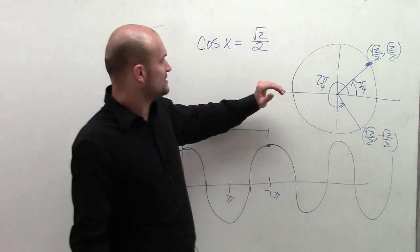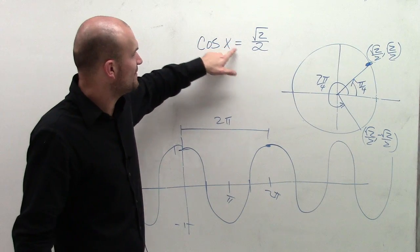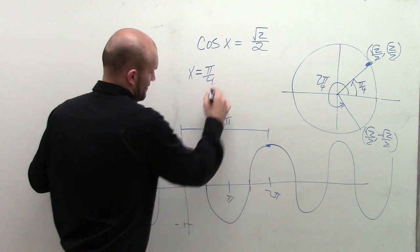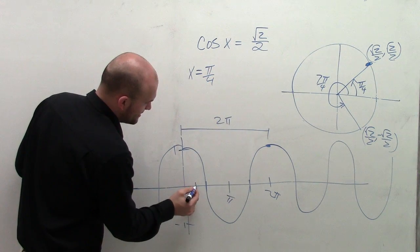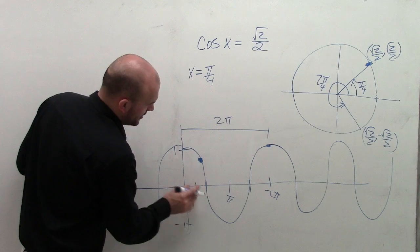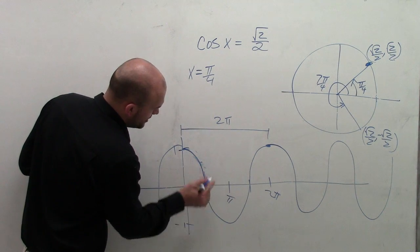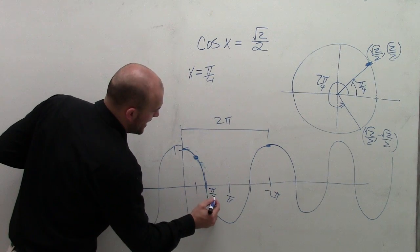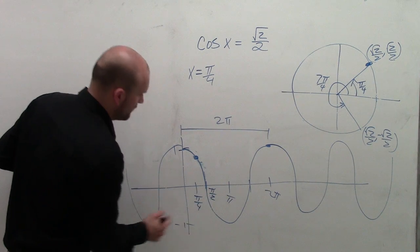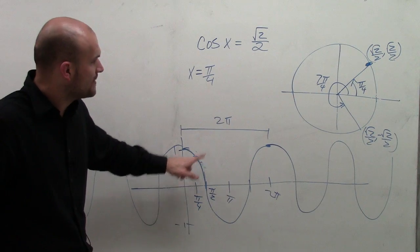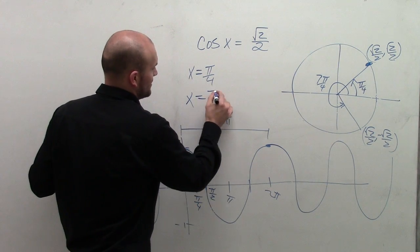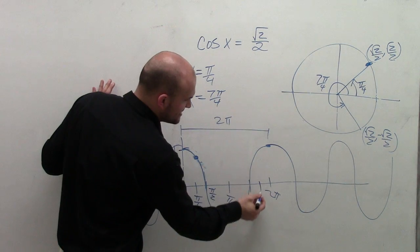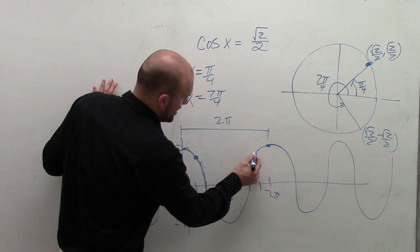For cosine of x equals the square root of 2 over 2, the first value is x equals pi over 4 — that point on the graph where, since pi halves is the midpoint, pi over 4 comes just before it. The next solution is at 7 pi over 4, right there on the graph.